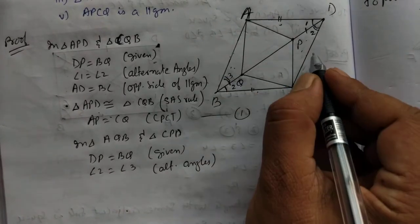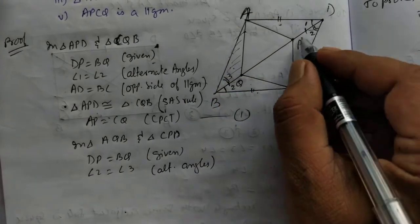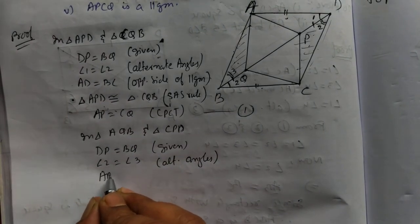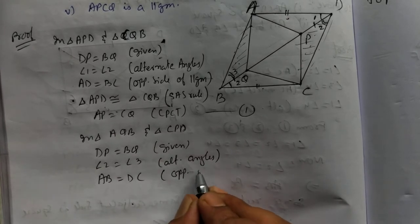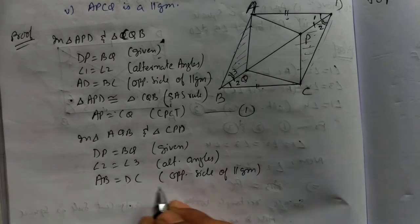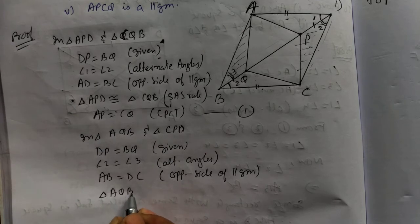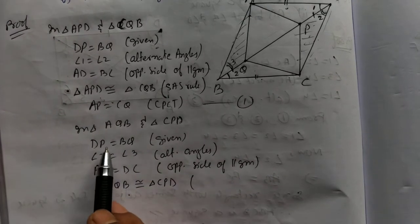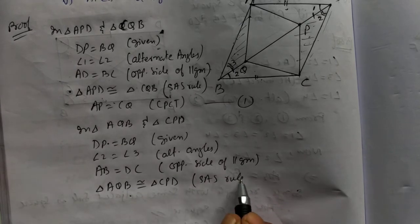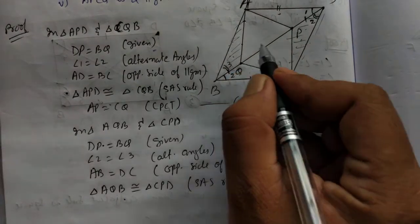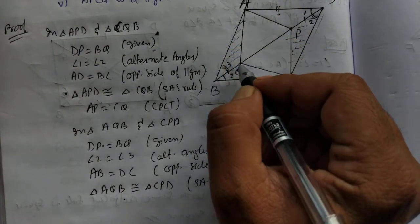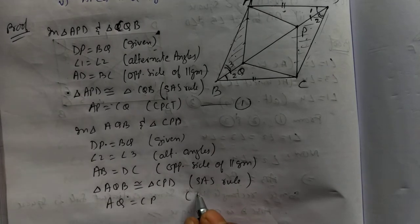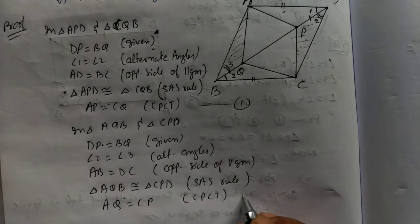Third point: this opposite side is the same. We are taking these two triangles. AB equal to DC. Reason: opposite side of parallelogram. So we got 3 points, that means the triangle is congruent. Triangle AQB is congruent to triangle CPD by SAS rule. Once the triangle is congruent, each part becomes same. AQ is a part of this and CP is a part of this, so AQ equal to CP. Reason: CPCT — corresponding part of congruent triangle.